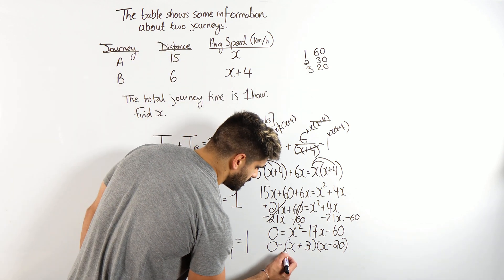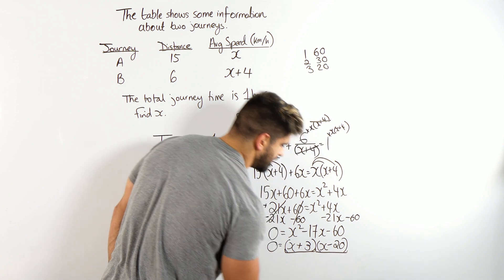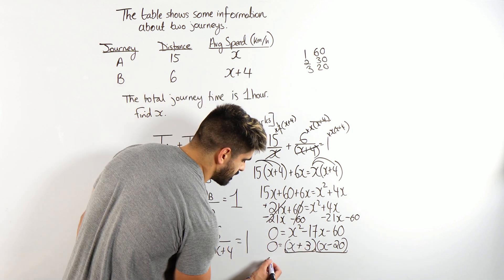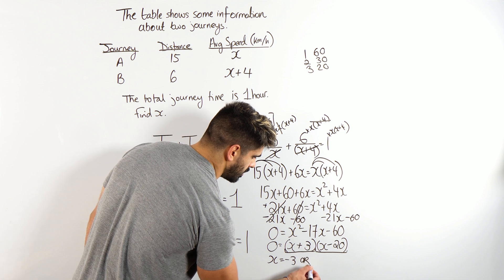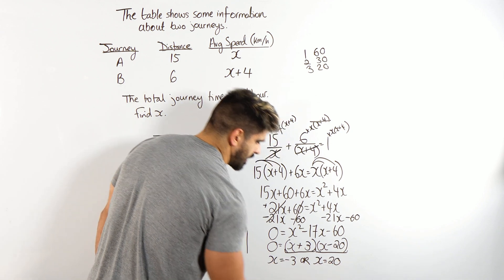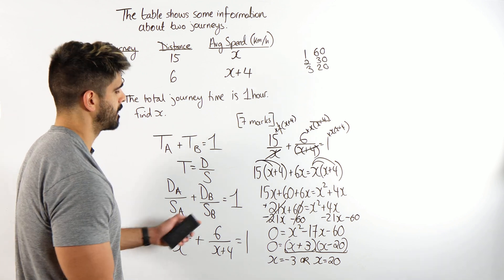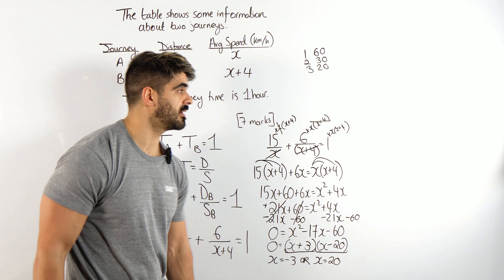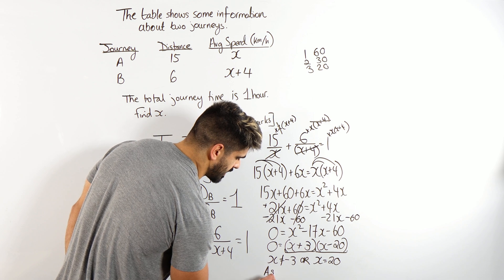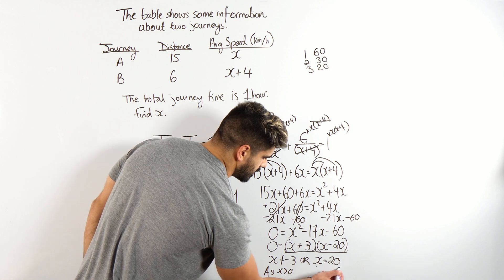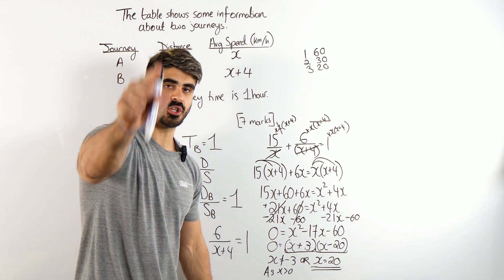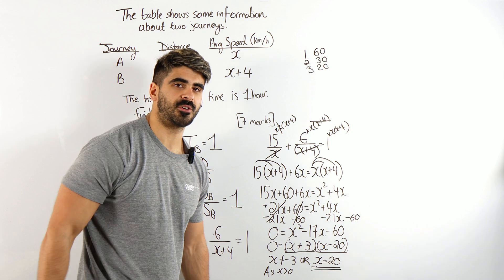Two things multiply to give you 0, so either x plus 3 equals 0, which gives x equals minus 3, or x minus 20 equals 0, which gives x equals 20. Now x cannot be negative here because we're talking about speed — speed is positive — so x can't be minus 3 as x must be bigger than 0. Therefore the only answer is x equals 20, for 7 beautiful marks. So now you should be securing the traffic warden job!